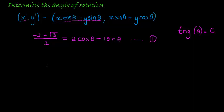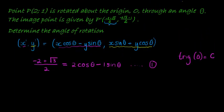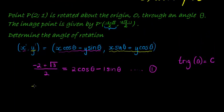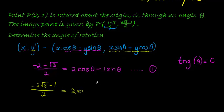Since we have two parts of the transformation, we have two equations. The second equation from the y-coordinate tells us that negative 2 times square root of 3 minus 1, divided by 2, equals x times sine theta plus y times cos theta. With x equal to 2 and y equal to 1, this becomes 2 sine theta plus 1 cos theta. This is our second equation.